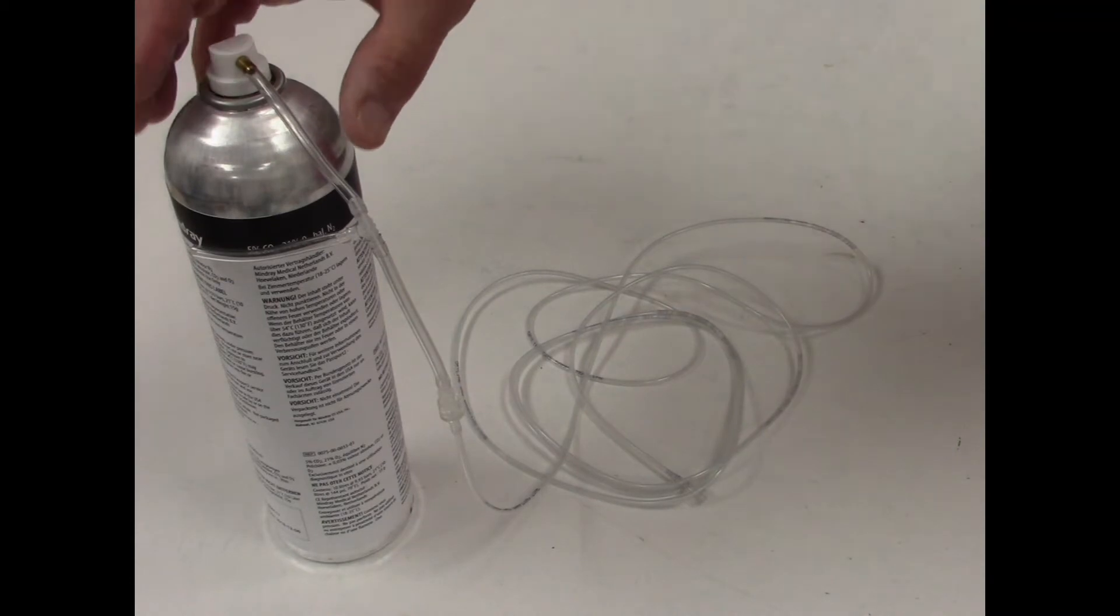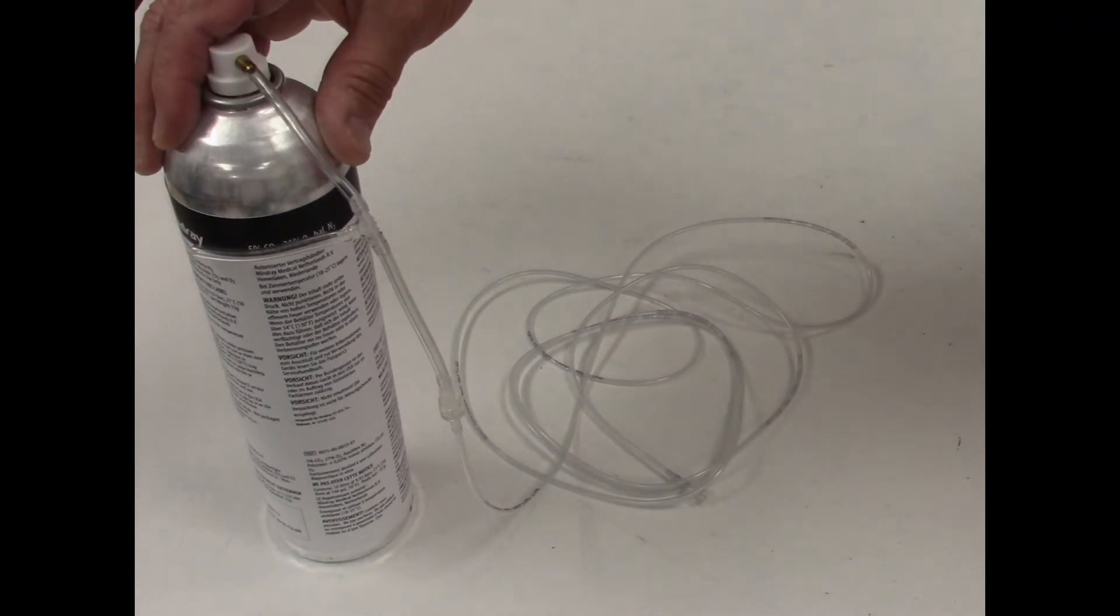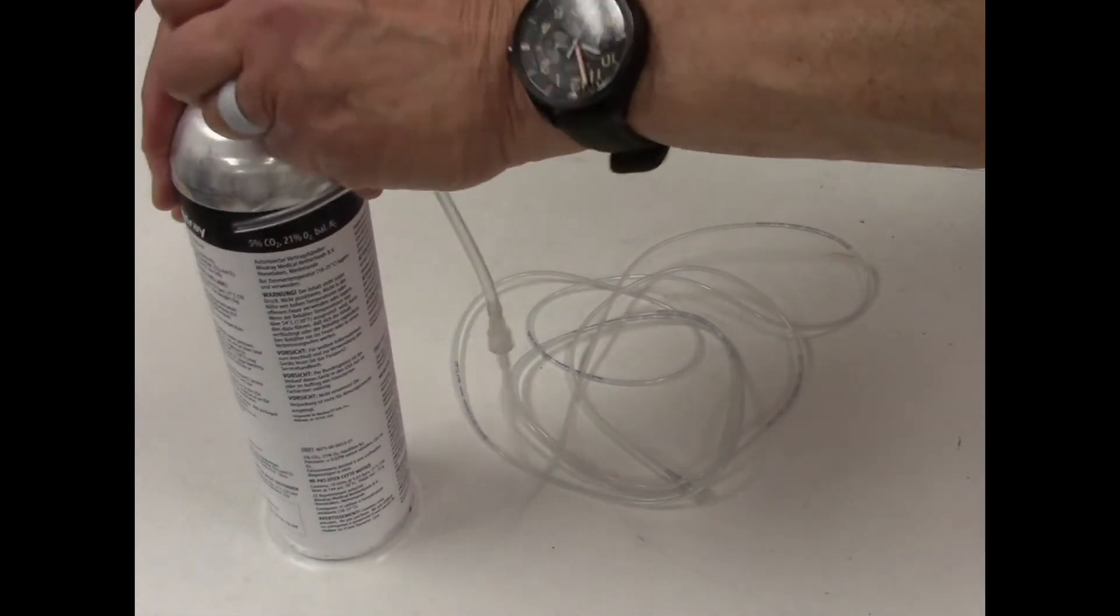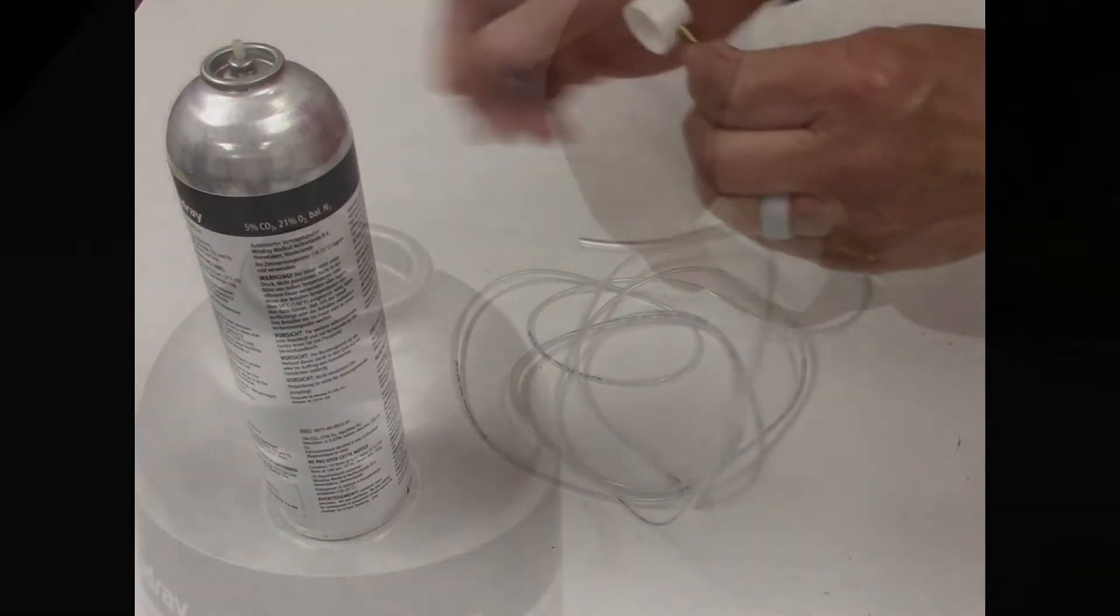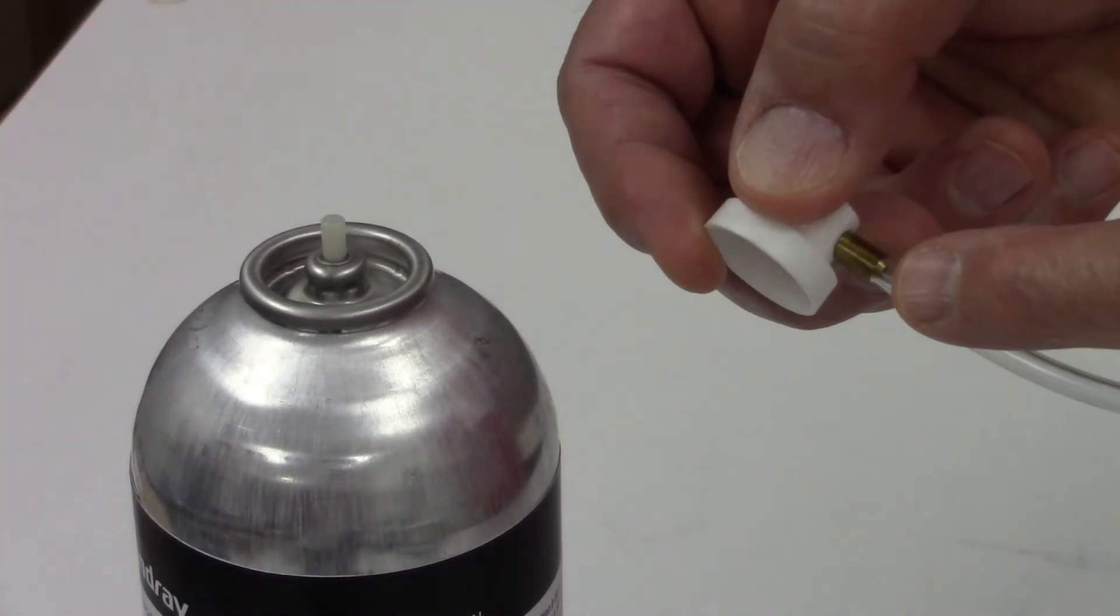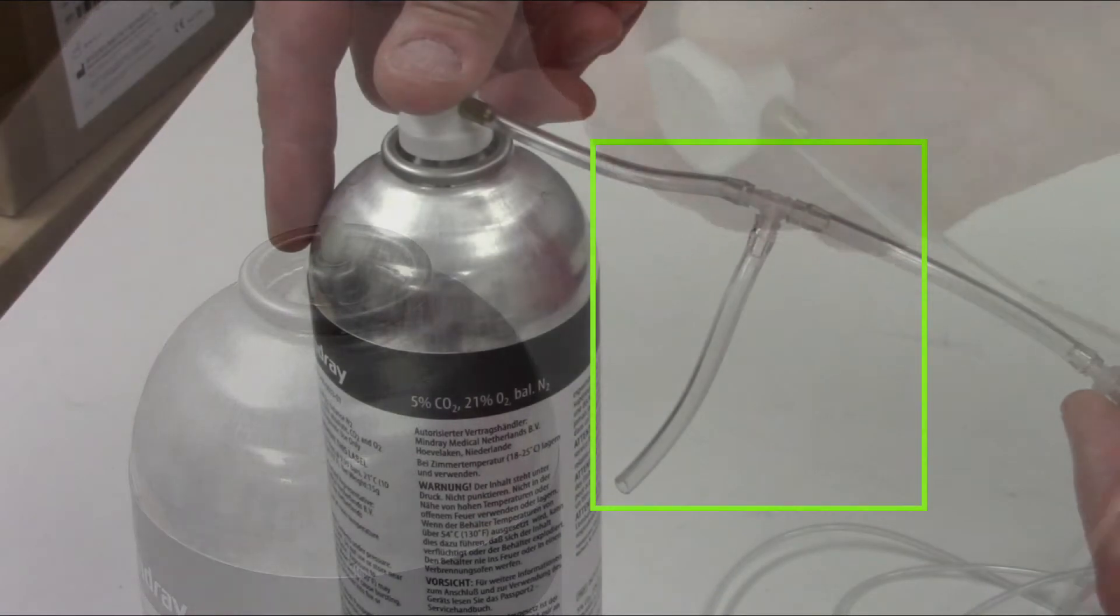This is Mindray's CO2 calibration gas. When you order and receive it, it will include the CO2 gas cylinder, a push-button delivery with a flow restrictor built in, and a vented T-fitting.